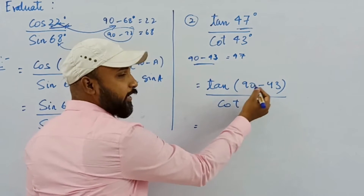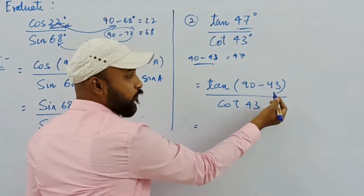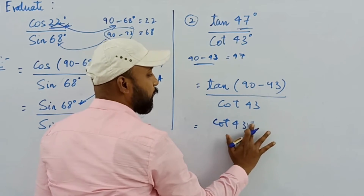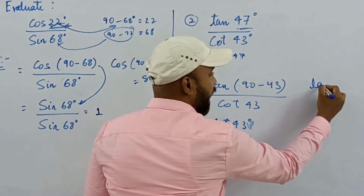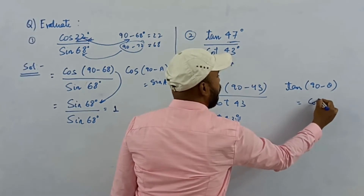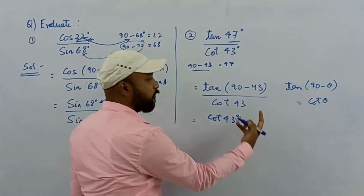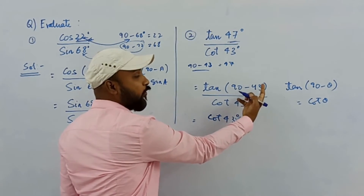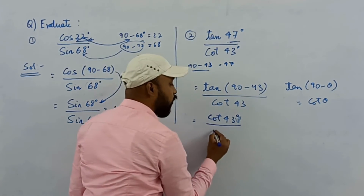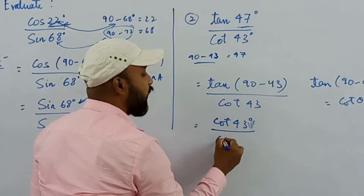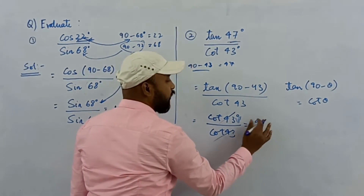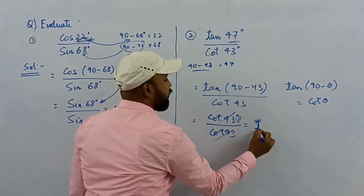What is tan(90 − 43)? Using the formula tan(90 − θ) = cot θ, tan(90 − 43) equals cot 43. So we have cot 43 divided by cot 43, which cancels out, giving us 1 as our answer.